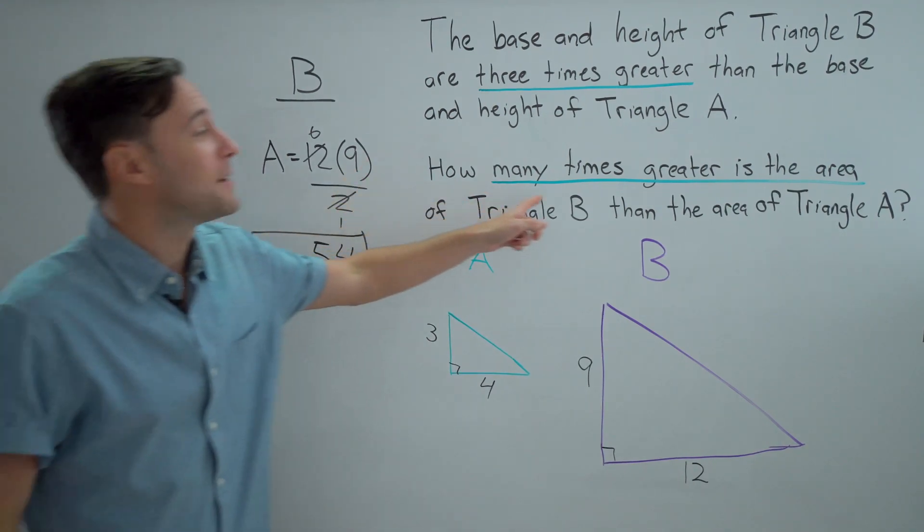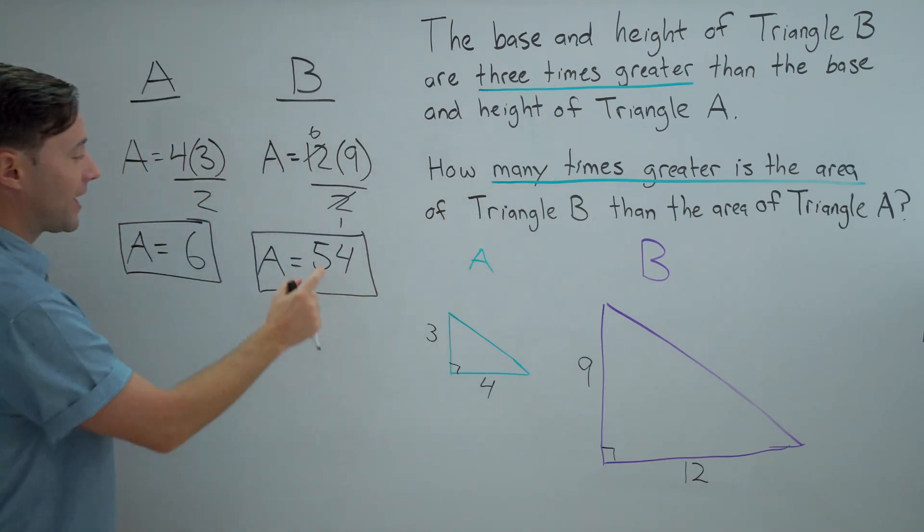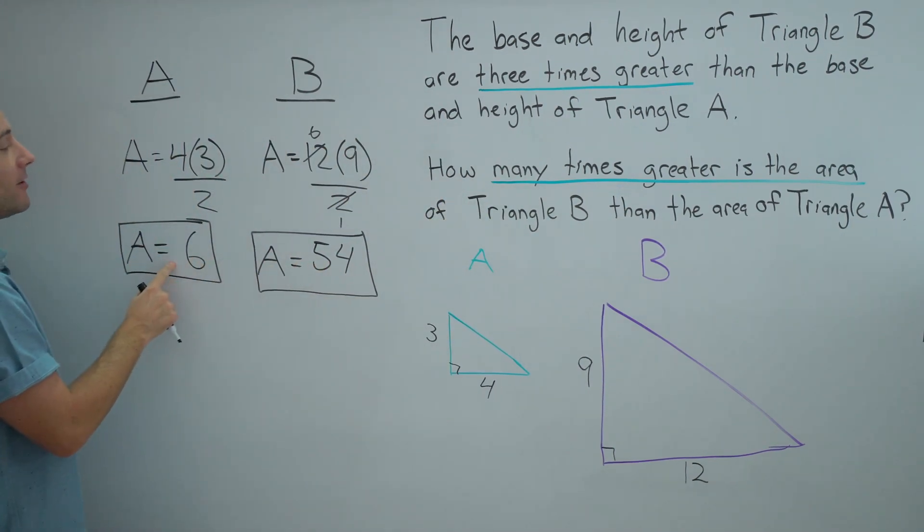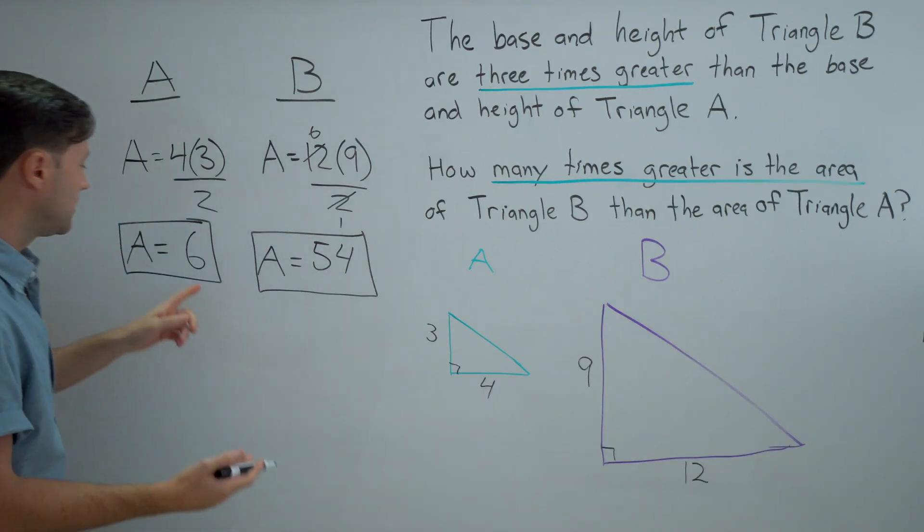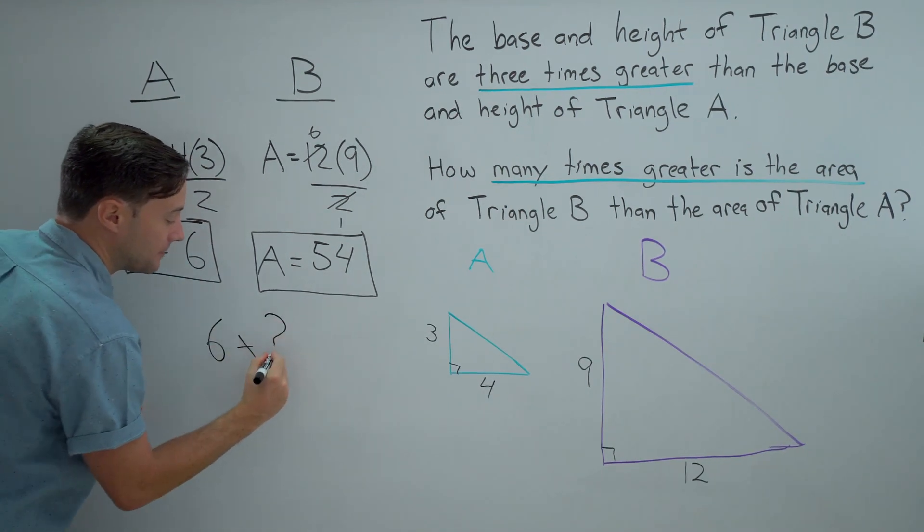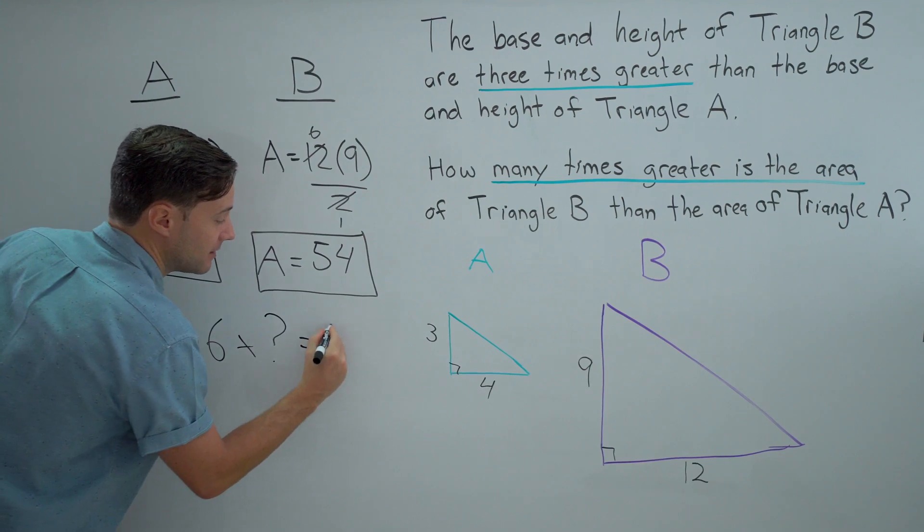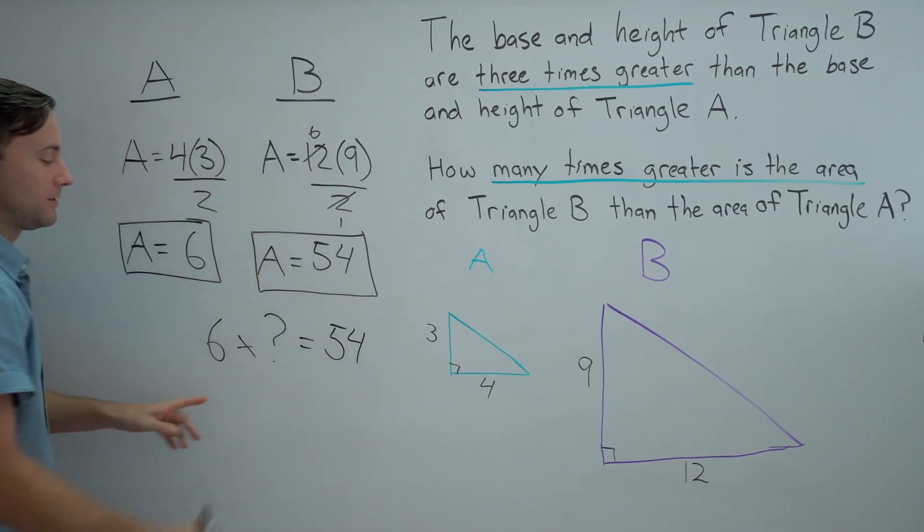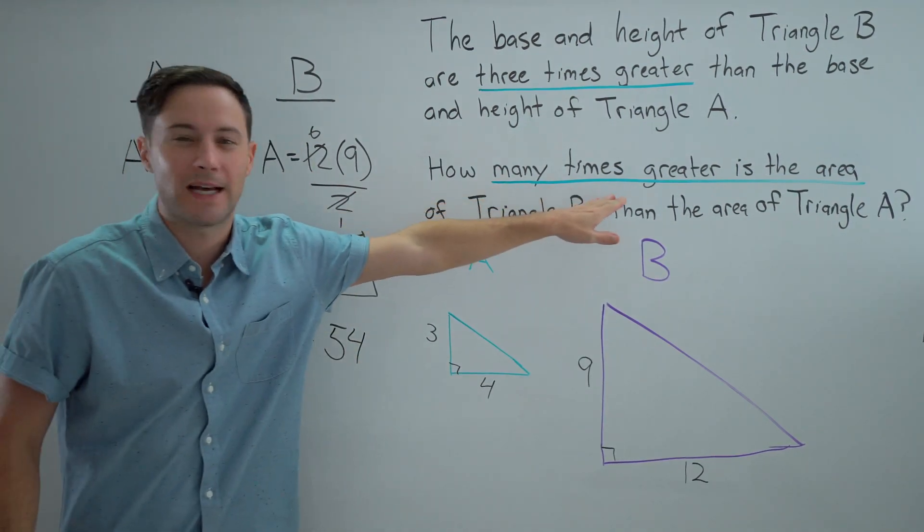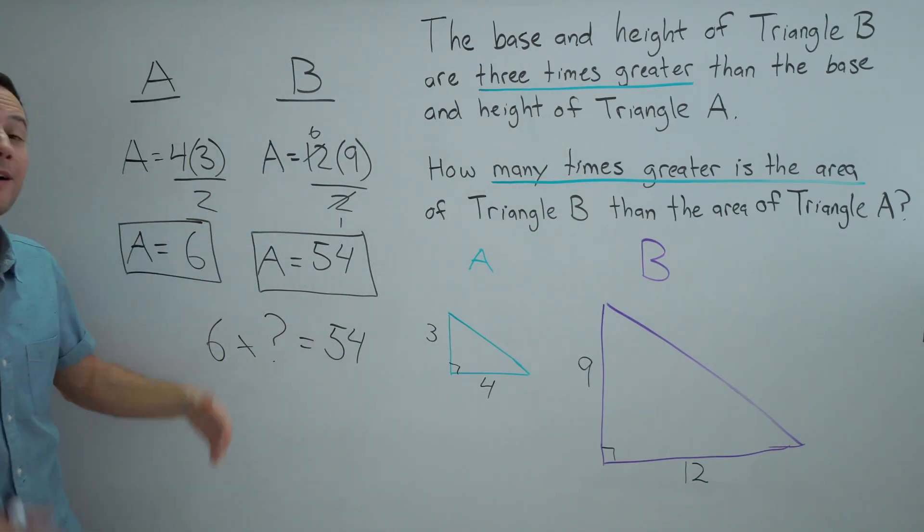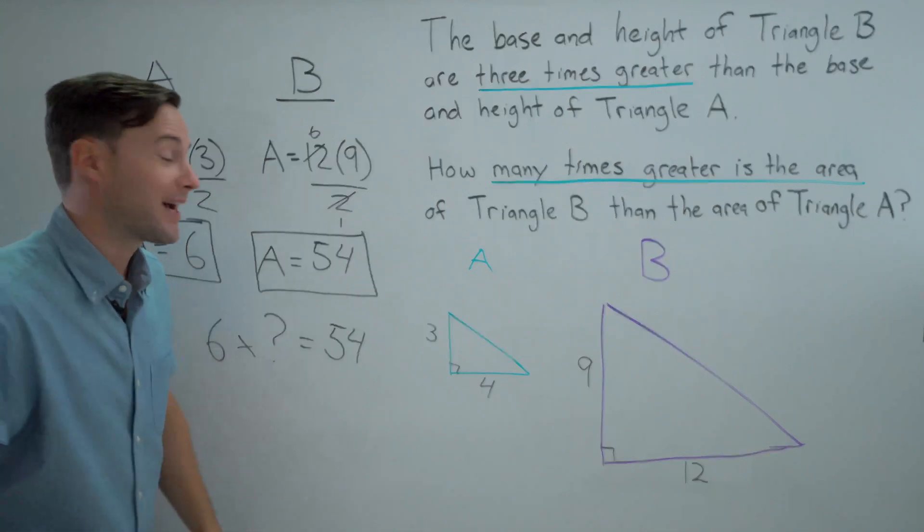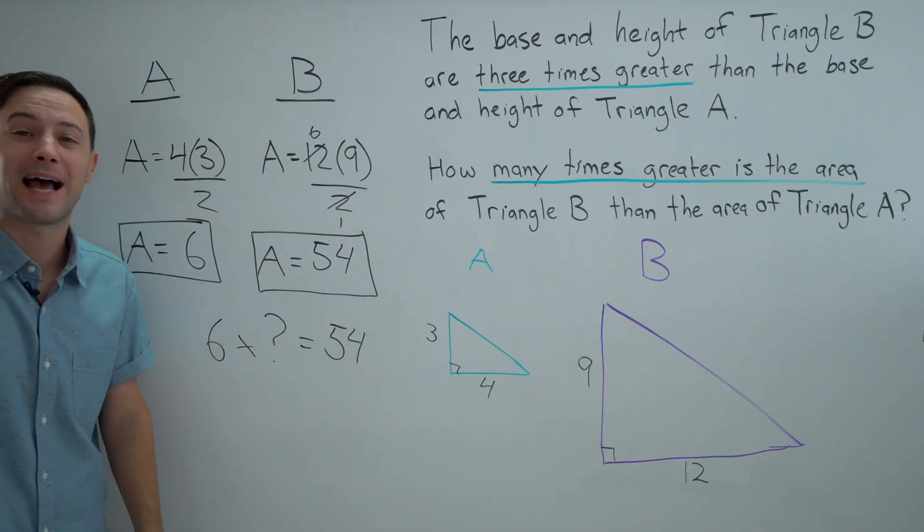The question is, how many times greater is the area of triangle B than triangle A? Well, how many times greater? In other words, six times what is going to give us the area of B, which was 54? That's what this question is asking. So six times what would give us 54? And if you know your multiplication facts, you should know that that is going to be nine.